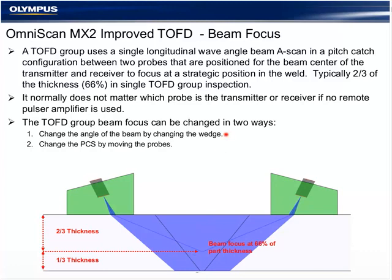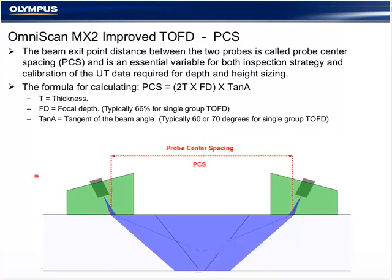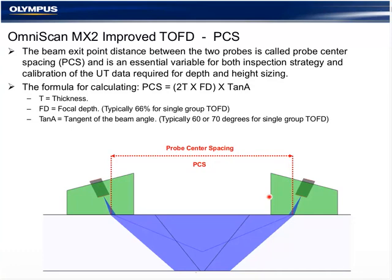There are two ways to change the focus: you can change the angle of the wedge — 60 and 70 degrees are very common angles for TOFD below one inch — or you can change the PCS. By moving the probes in and out, it will move the focus point up or down. PCS is probe center spacing from exit point to exit point, not probe base to probe base. This is calculated automatically in beam plotters like the NDT Setup Builder from Olympus or the ES Beam Tool from Eclipse, or it can be done easily on a calculator.